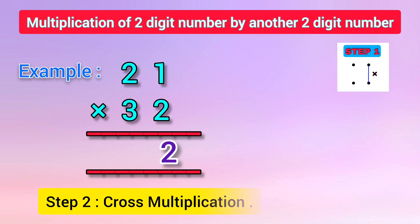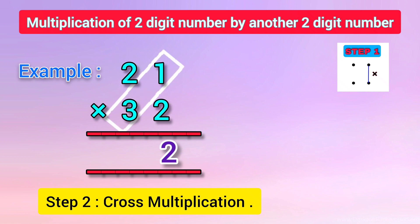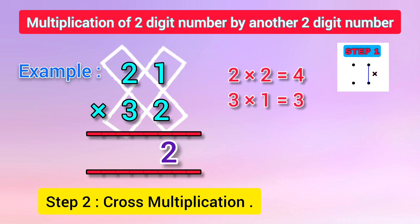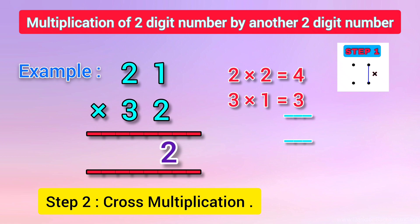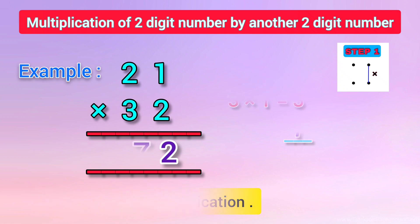The second step is cross multiplication. The digit in the tens place of the first number is multiplied by the digit in the ones place of the second number, and the digit in the ones place of the first number is multiplied by the digit in the tens place of the second number. That is, 2 multiplied by 2 gives 4, and 1 multiplied by 3 gives 3. We add both products: 4 plus 3 is equal to 7, and 7 is written down.